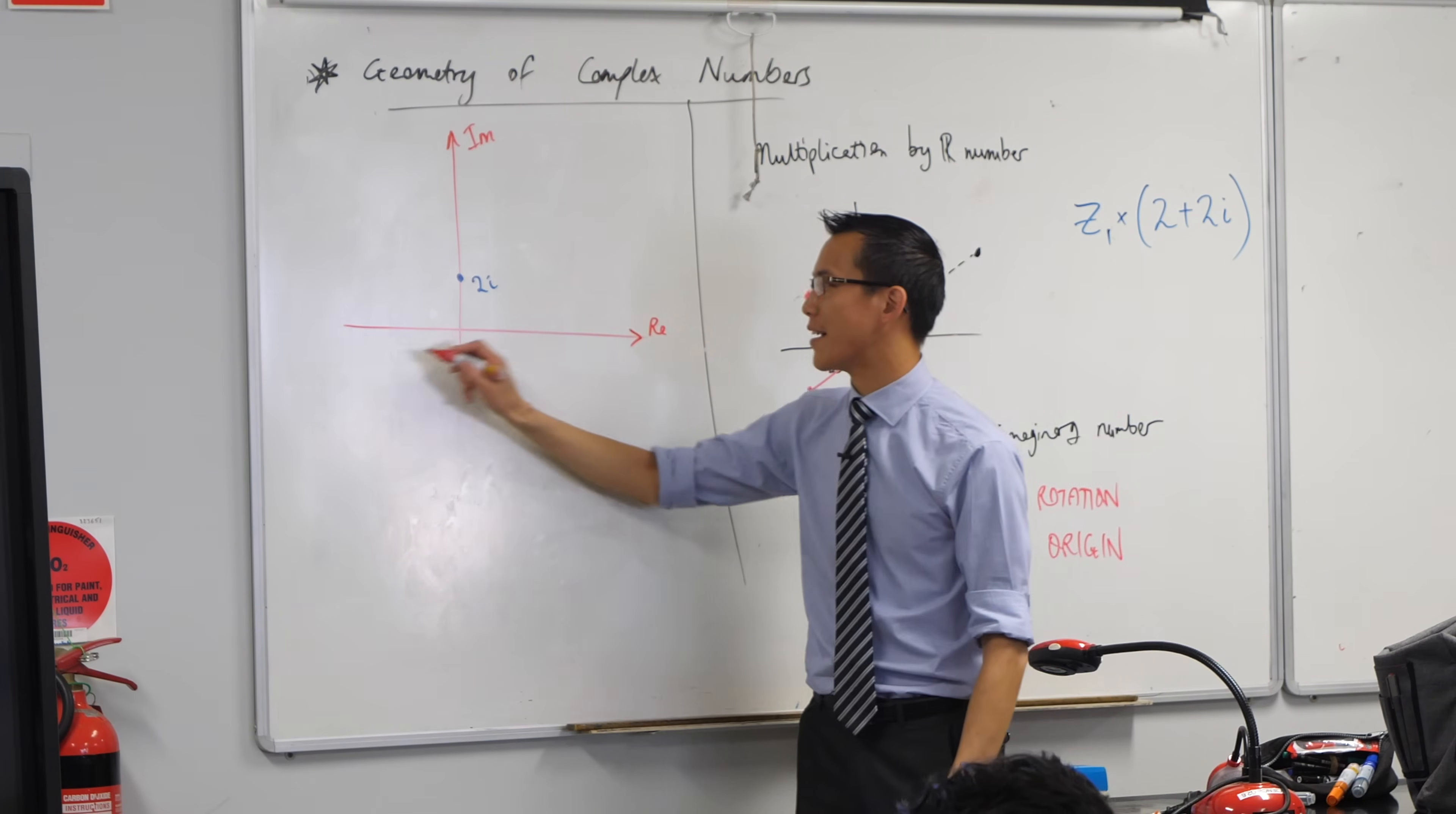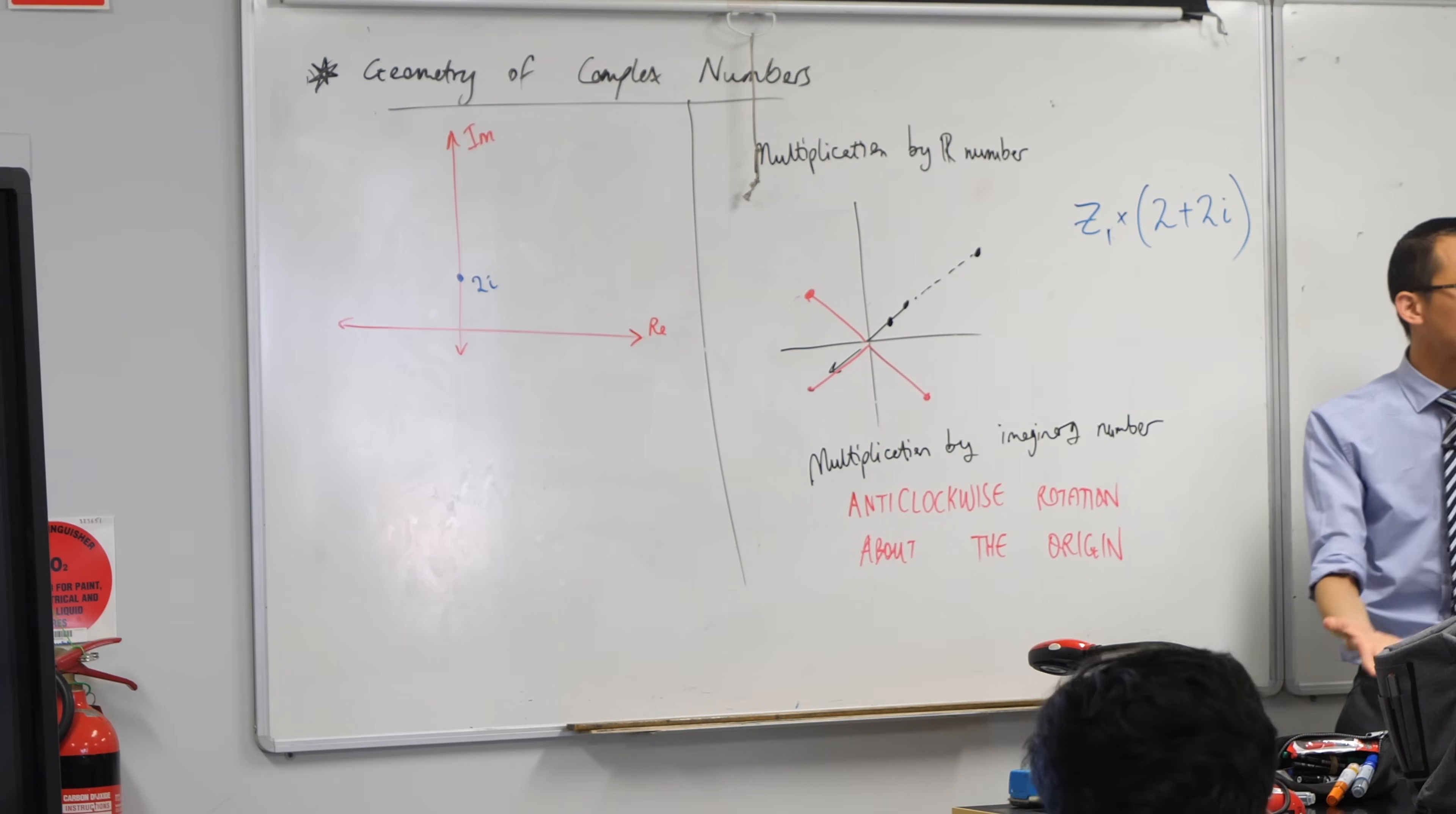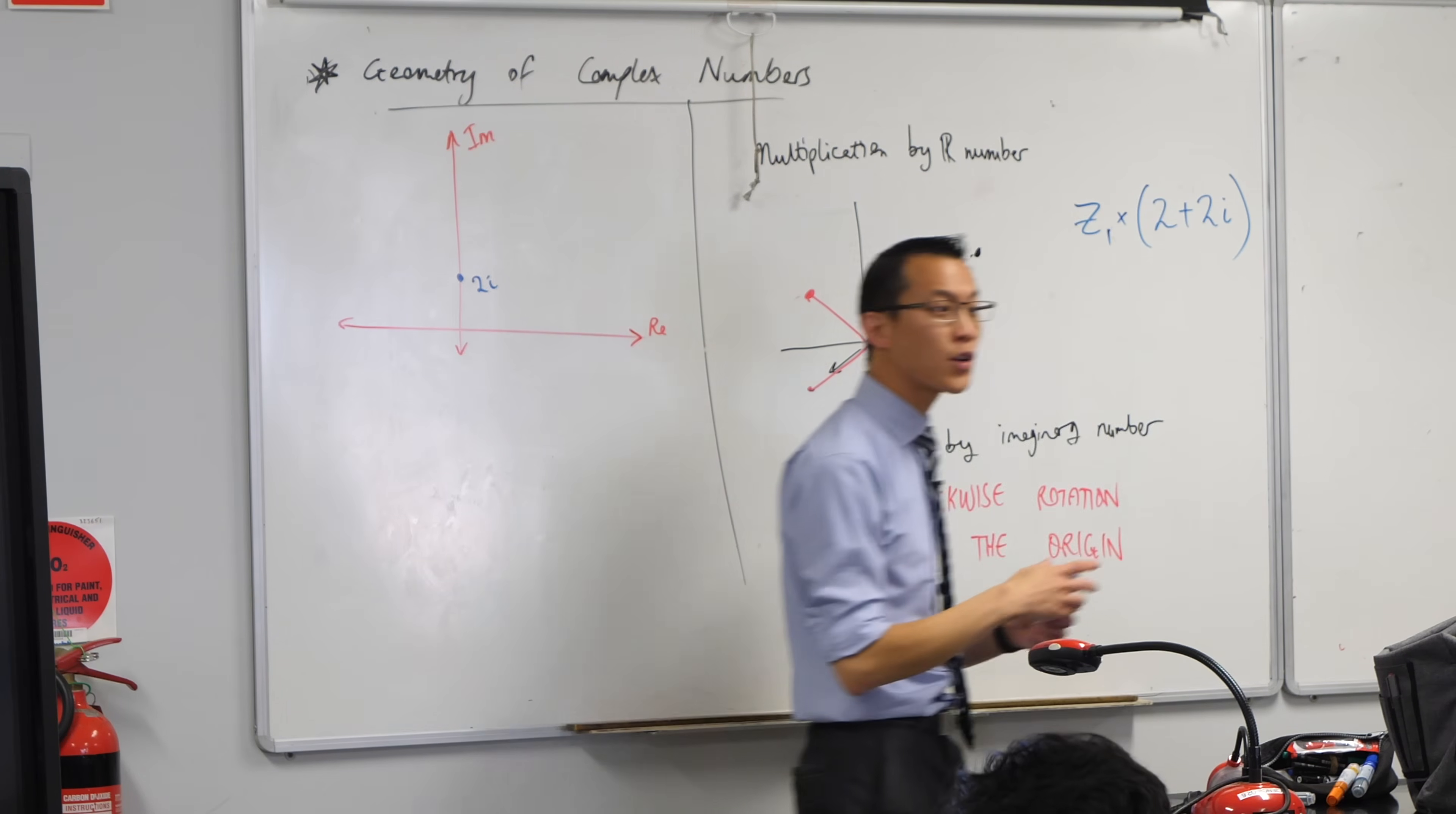By the way, it is always important, and I've been a bit slack on this, that you do state this is a complex plane, so I've got real and imaginary axis. It's not x and y, which are two real numbers. Okay, so I've got 2i here.